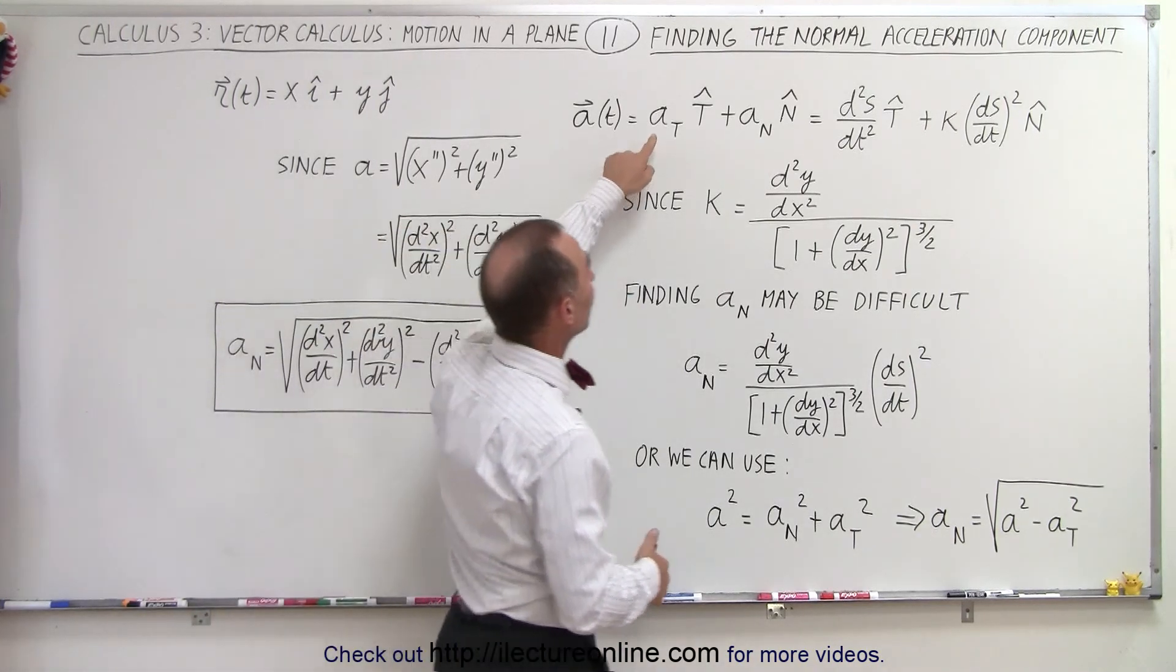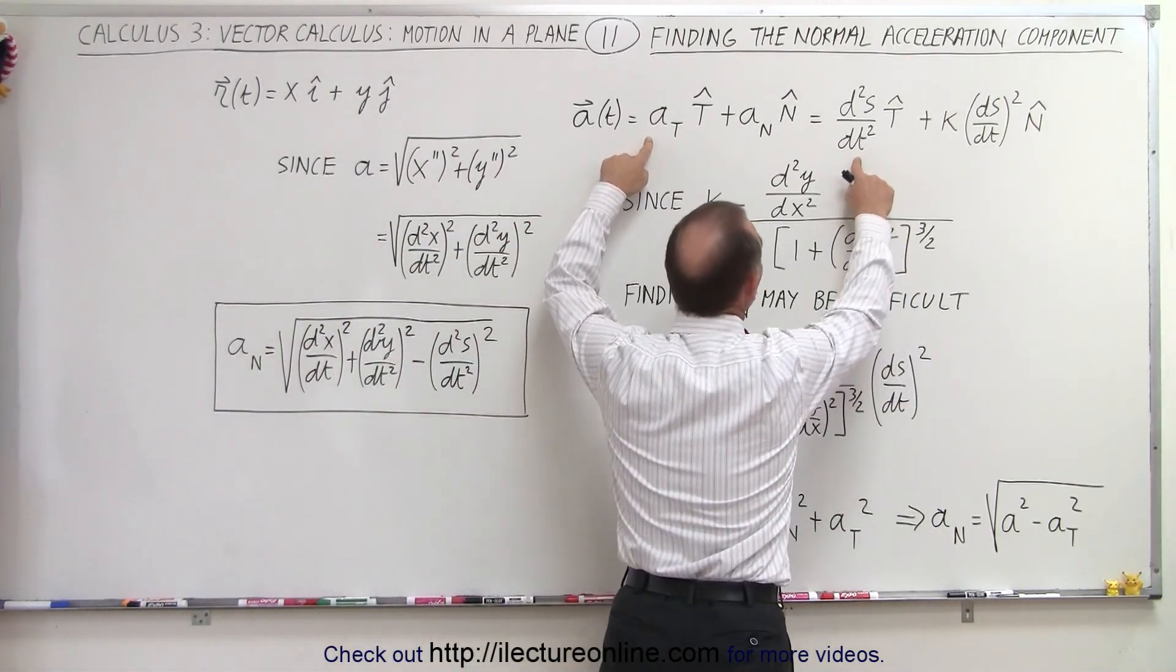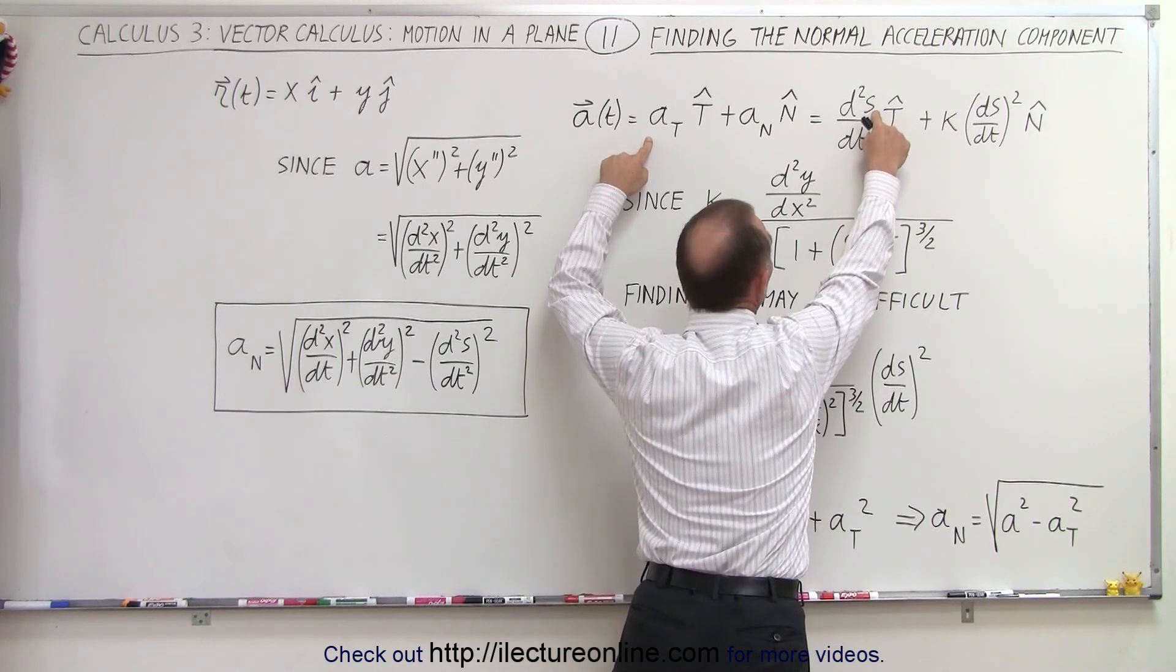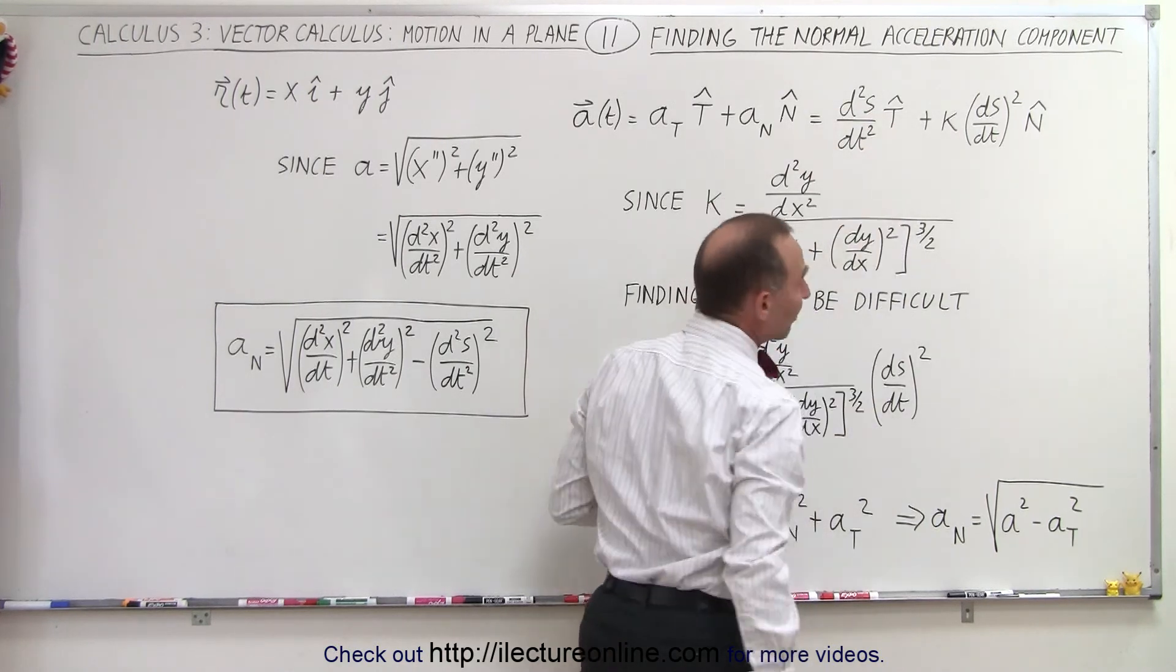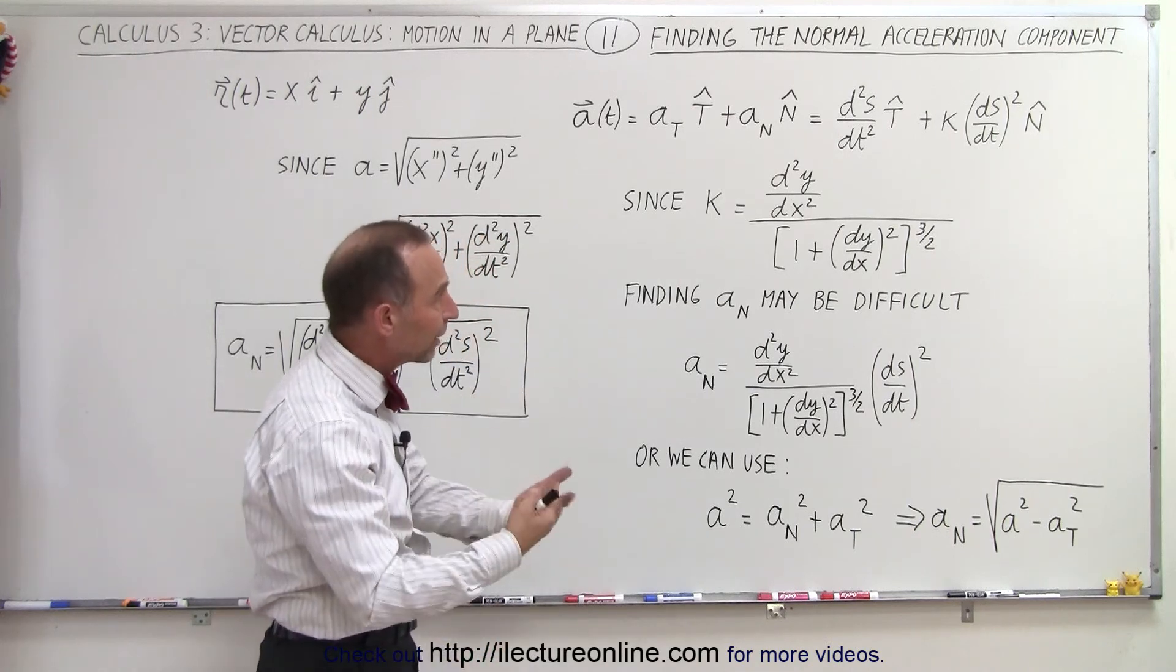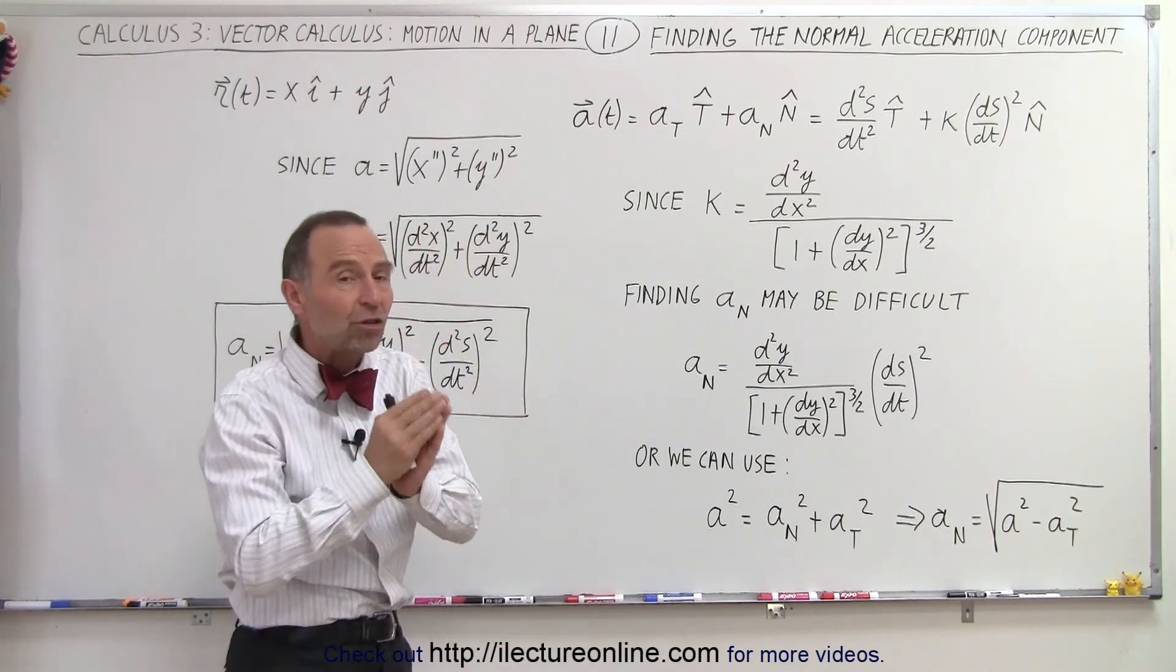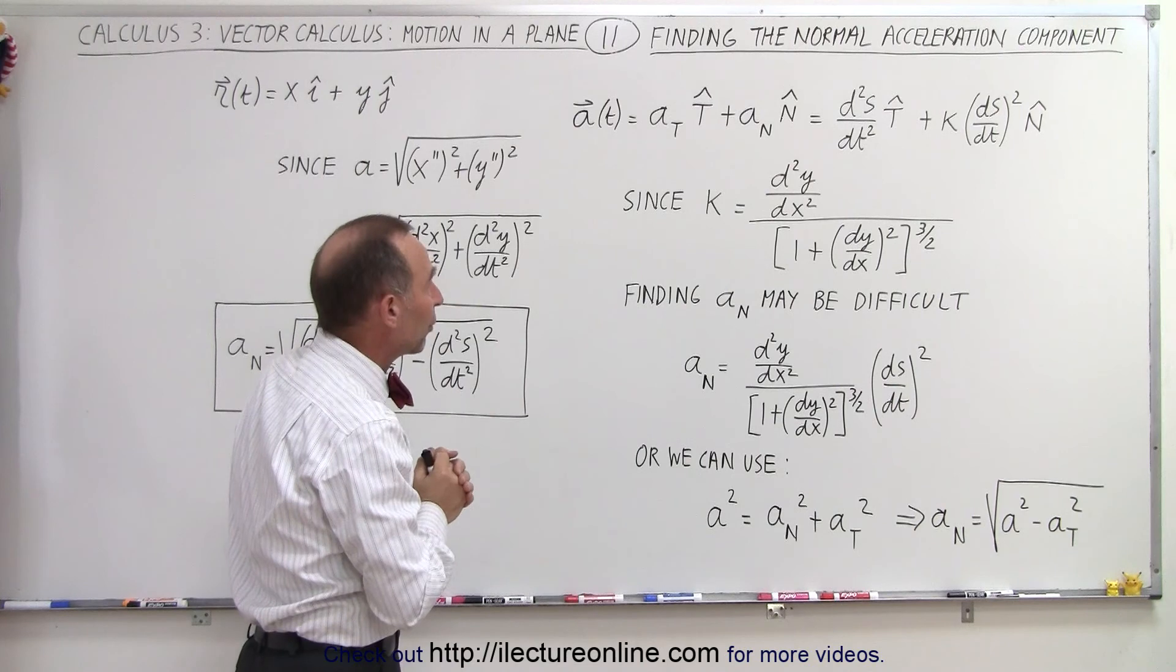The tangential component can simply be found by taking the second derivative of the position along the curve with respect to time. In other words, we take the velocity along the curve, take the derivative of that, and we have the tangential component of the acceleration.